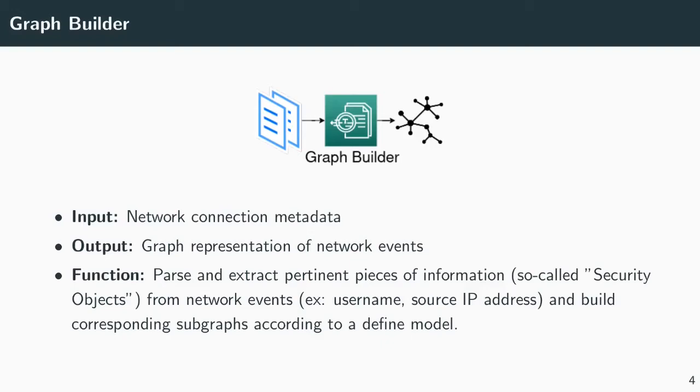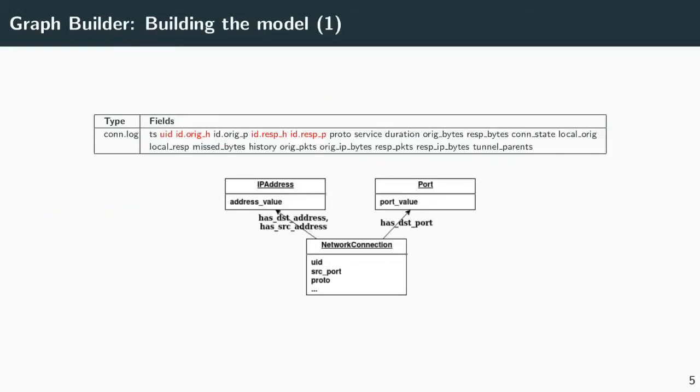We build our data model by taking inspiration from the threat intelligence model STIX. This model is based on the extraction of sub-elements called cyber-observables, which can be easily linked to indicators of compromise, such as the IP address of a malicious actor. We extended the model to extract the elements that we believe allow us to link events together. In the paper, our model is built on Zeek log files, but it can be extended to any sources of information on the same basis.